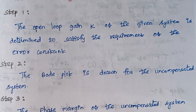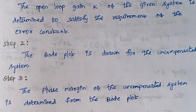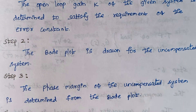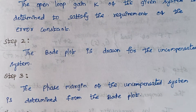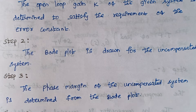Step 3 is the phase margin of the uncompensated system is determined from the Bode plot. From the Bode plot we are going to find what is the value of phase margin.